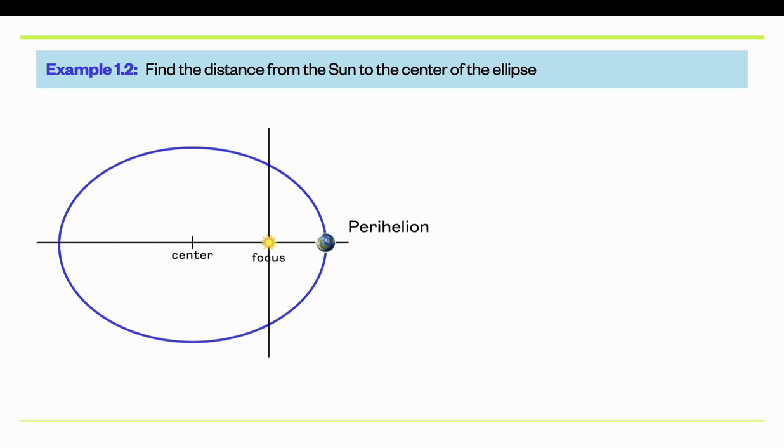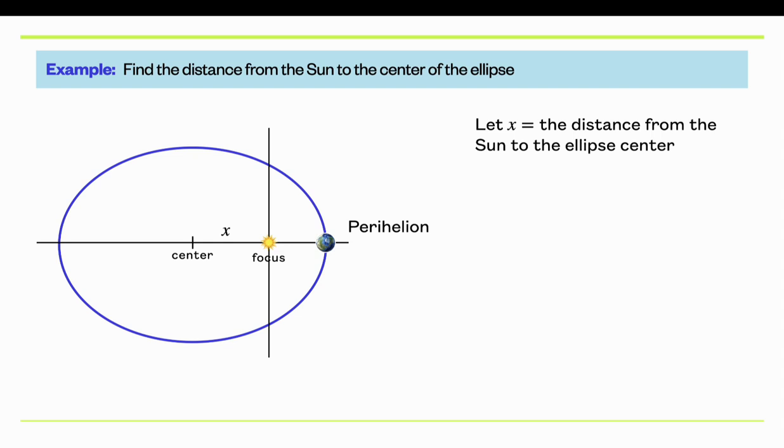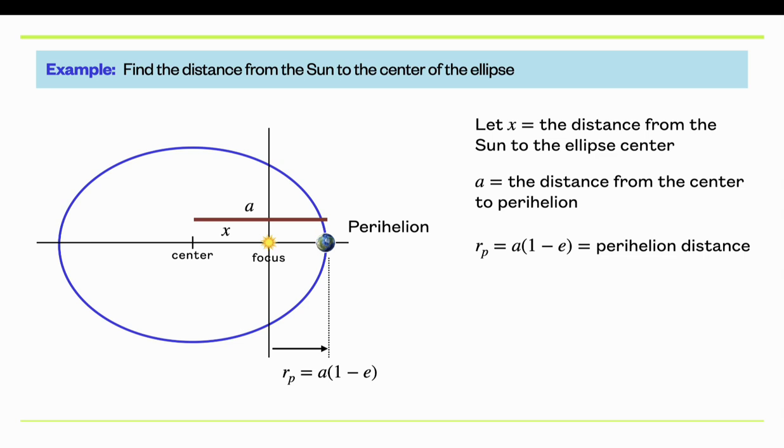Okay, let's do another quick example. Let's try to find the distance of the Sun or one of the foci to the center of the ellipse. So this is a pretty simple calculation given our previous result. That distance from the center out to the focus is just a times e. Very simple result.